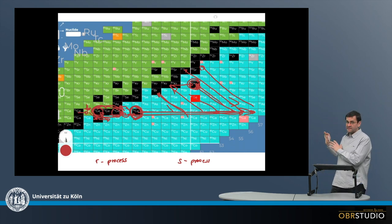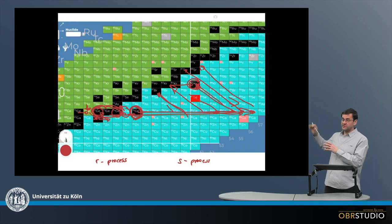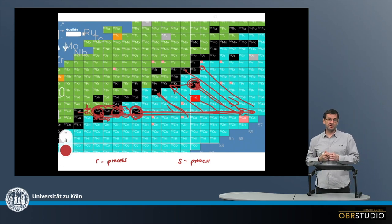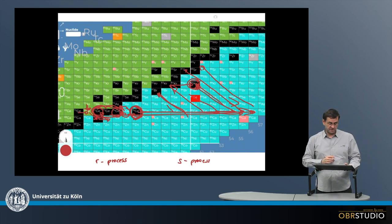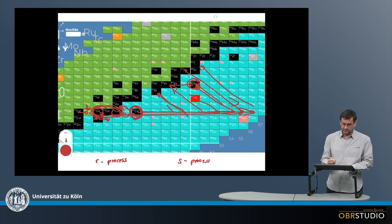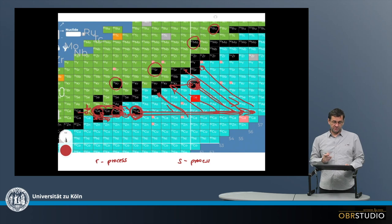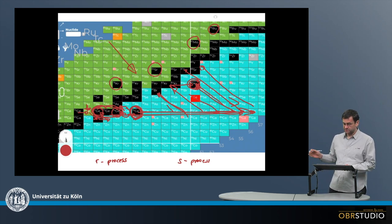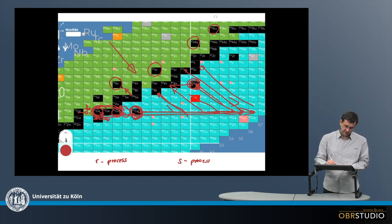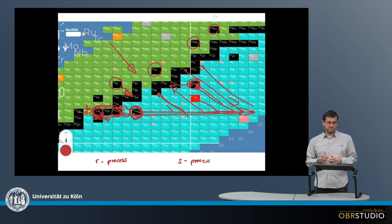These two processes, S and R-process, produce most of the heavy elements. However, there are a couple of other stable nuclides that apparently cannot be produced by either the R-process or the S-process, because the decay direction — beta-plus — goes the wrong way. It is not possible for something to decay into these nuclides from that direction. This is still a matter of debate.